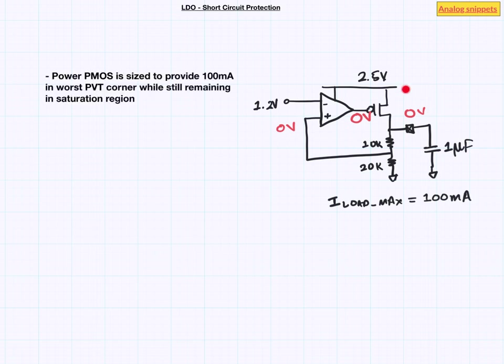That means in normal operation of this LDO, the lowest this node will go is about 1V. What all this implies is that if you apply 0V at the gate of this power transistor, the current through it can be much higher than 100mA.